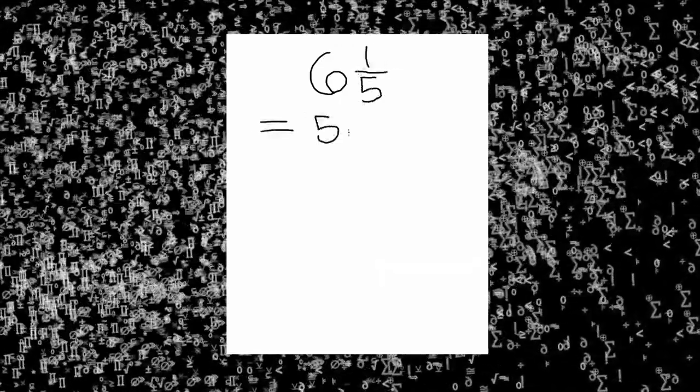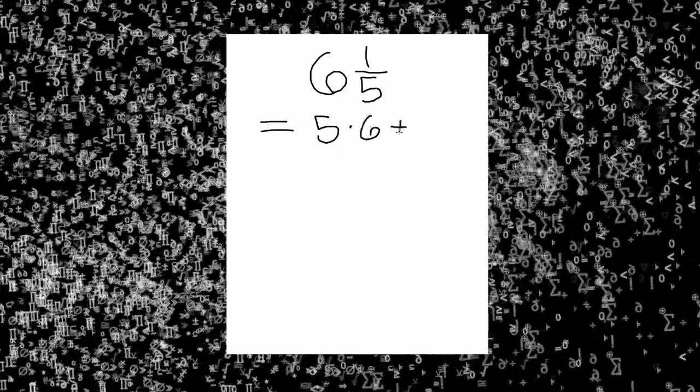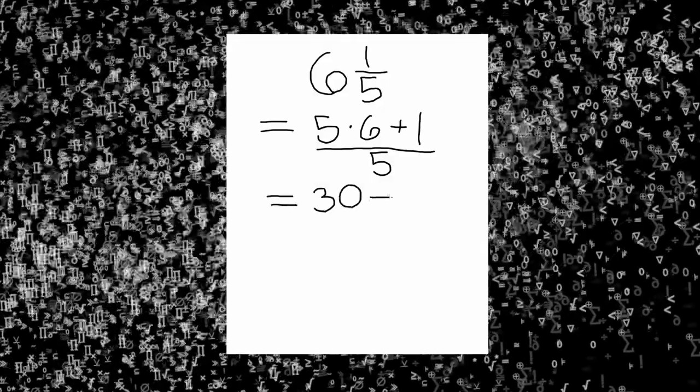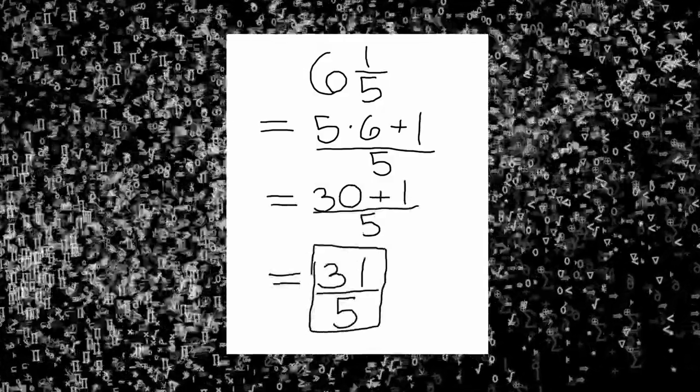The syntactically correct way to express six and one-fifth as an improper fraction would be to first multiply five times six and then add one. This is over five. Your improper fraction is thirty-one-fifths.